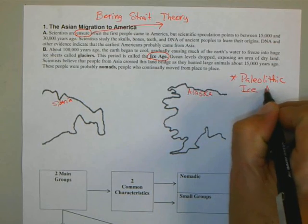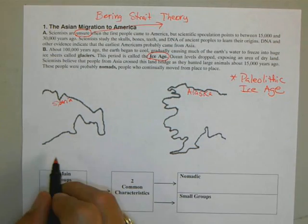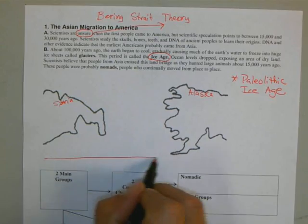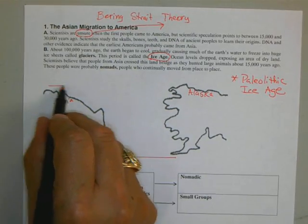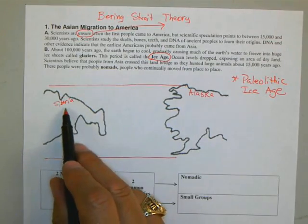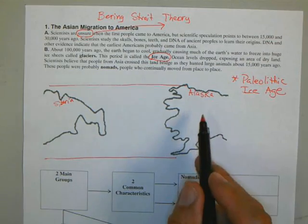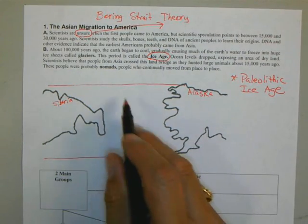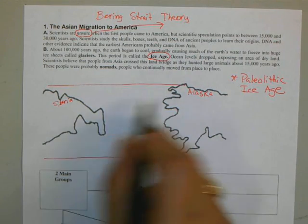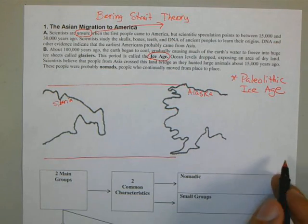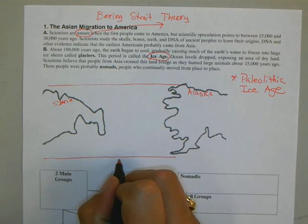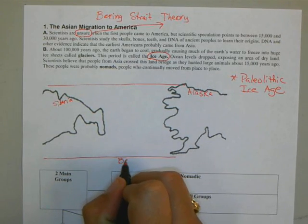What's going to happen is you're going to have a freeze, and these two landforms — Siberia and Alaska — are going to be joined together because of this Ice Land Bridge. The waterway right here is known as the Bering Strait.